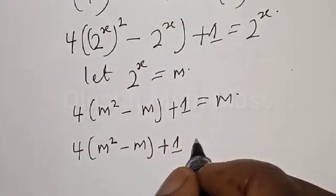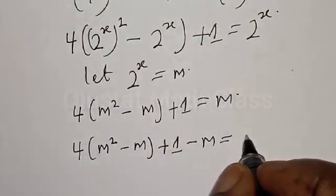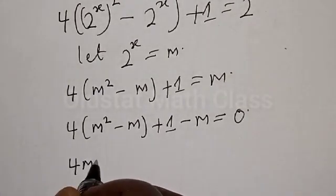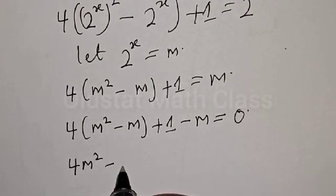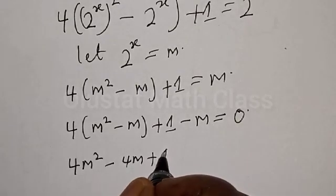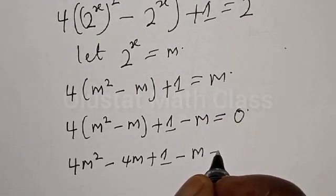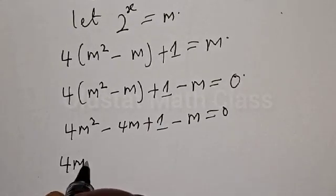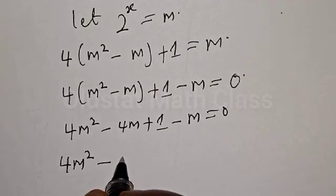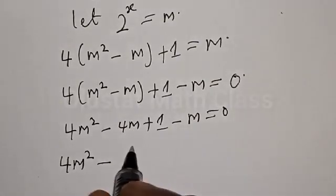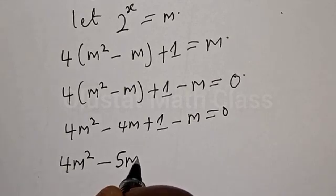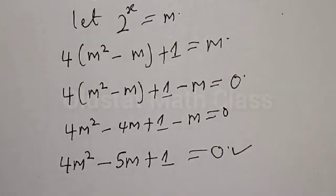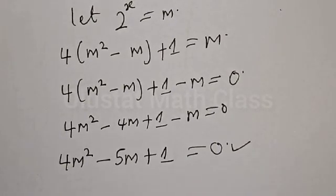Moving m to the other side it becomes minus m, giving us 4m squared minus 4m plus 1 minus m equal to 0. This simplifies to 4m squared minus 5m plus 1 equal to 0. This is a quadratic equation and we'll solve it using the factorization method.